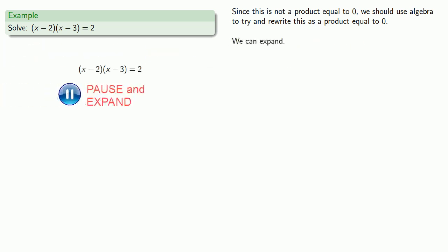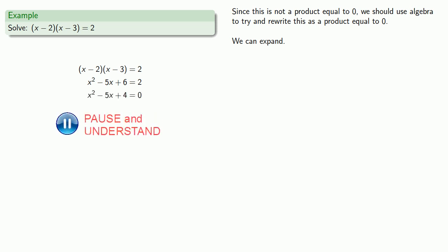We can expand. Then factor. We'd like it equal to zero, so let's subtract 2 from both sides. We want a product equal to zero, so that requires us to factor.